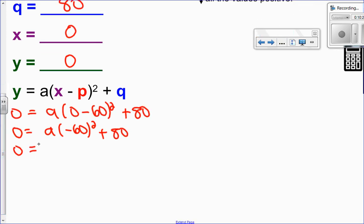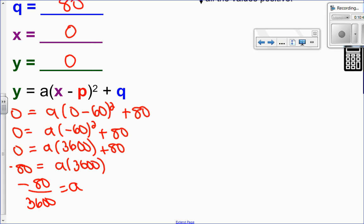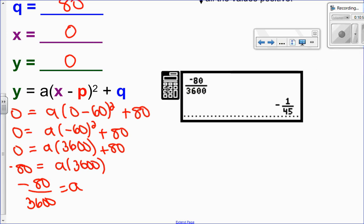So negative 60 squared means negative 60 times negative 60, which is positive 3,600, plus 80. So I will subtract 80 from both sides, and then divide both sides by 3,600. So negative 80 over 3,600 equals a. Now, I'm going to use my calculator to help me put that into lowest terms, which is negative 1 over 45. So since I know that a is negative 1 over 45, I can now put it all together in one equation. So negative 1 over 45 times x minus 60 squared plus 80.